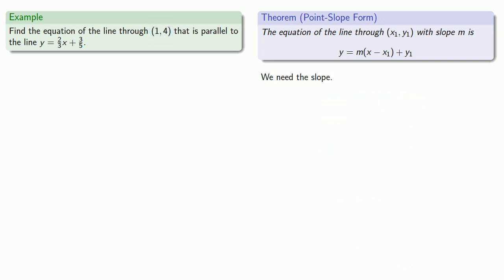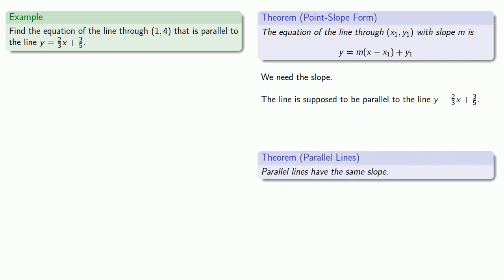What we do know is the line is supposed to be parallel to another line. And that tells us something useful, because we know something about the slopes of parallel lines. Parallel lines have the same slope. So all we have to do is figure out what the slope of this line is.